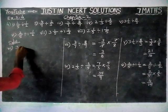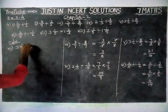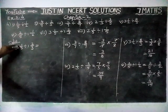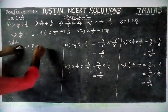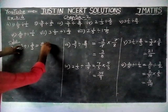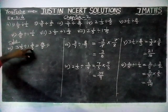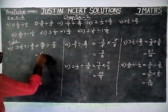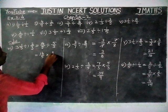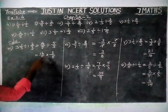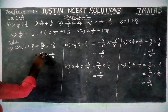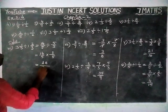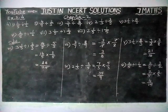Seventh question: 3⅕ divide 1⅔ is equal to — here both numbers are mixed fractions, so we have to convert into improper. Whole part into denominator plus numerator: 3 times 5 is 15, 15 plus 1 is equal to 16 divided by 5. Division — whole part into denominator plus numerator: 1 times 3 is 3, 3 plus 2 is equal to 5 divided by 3. Now we find the reciprocal: 16/5 multiply 3/5. We cannot simplify, so multiplying numerator into numerator, denominator into denominator: 16 times 3 is 48, divided by 5 times 5 is 25. So, the answer for the 7th question is equal to 48/25.